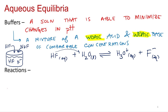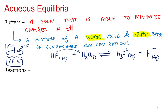How do buffers minimize the pH? There's two things that can happen - obviously there's going to be a change to the pH that they're going to minimize. So how do we change the pH? We'd either add an acid or add a base. Those are the two ways you can change the pH.